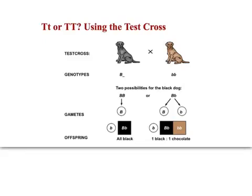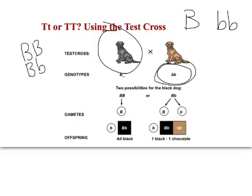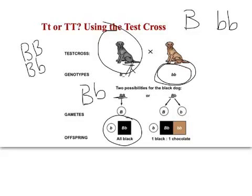Let's look at another example. In Labrador retrievers, if the dog has the dominant allele they're black, and if they're homozygous recessive they're brown. If you have a black dog, you don't know if they're homozygous dominant or heterozygous. If we cross this dog with a homozygous recessive: if they were homozygous dominant, all offspring would be black. But if the black dog were heterozygous, it would donate a capital B half the time and a lowercase b half the time, giving you half black offspring and half chocolate labs. Using this test cross — crossing to a homozygous recessive individual — you can figure out what the second allele is if you have the dominant phenotype.